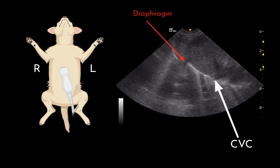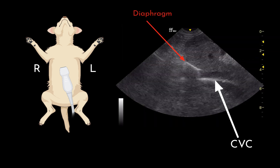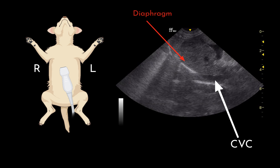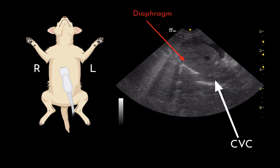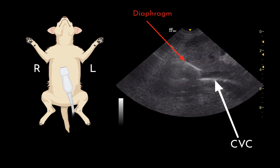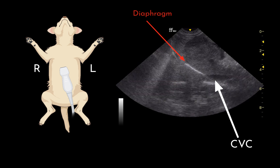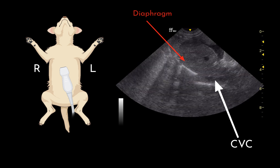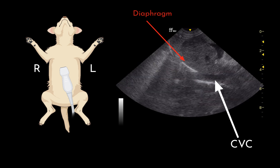Then, the ultrasound probe is slowly fanned off either side of the CVC and returned to the position where the CVC is subjectively felt to be at its widest diameter.